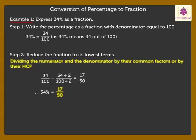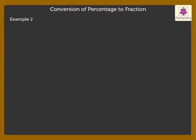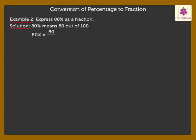Now, let's solve one more example of the same type. Example 2: Express 80% as a fraction. 80% means 80 out of 100. Thus, 80% is equal to 80 upon 100. By reducing 80 upon 100, we get 4 upon 5. Therefore, 80% is equal to 4 upon 5.